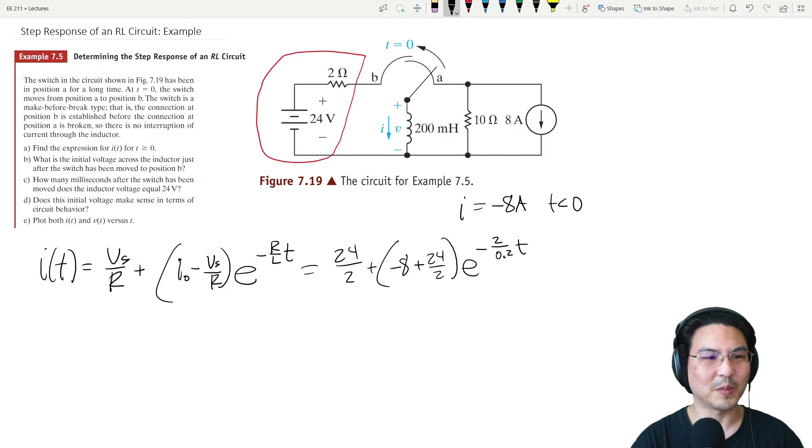Done, there's part A. We can simplify a little bit, so 12 plus—oh sorry, there's a minus sign right here, so that should have been a minus. Okay, there we go. So minus 8 minus 12 is negative 20, 2 over 0.2 is 10.